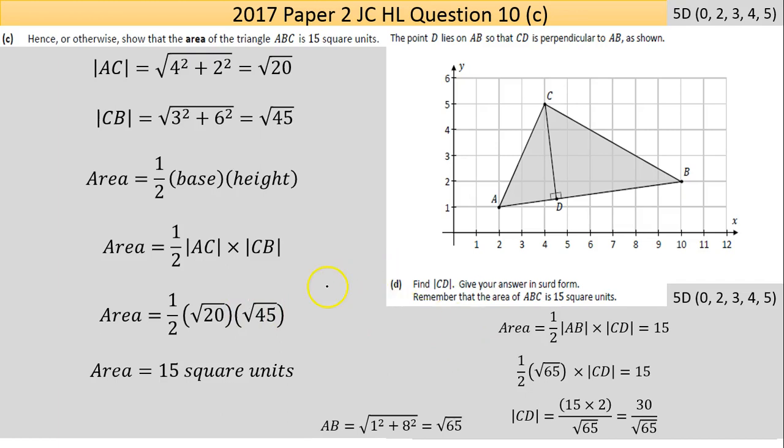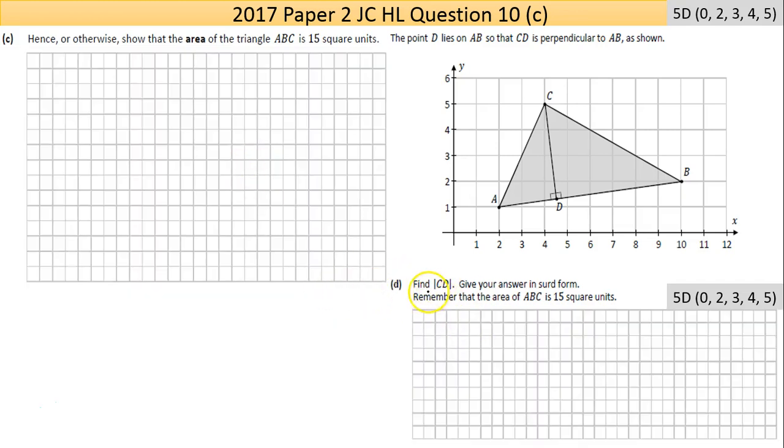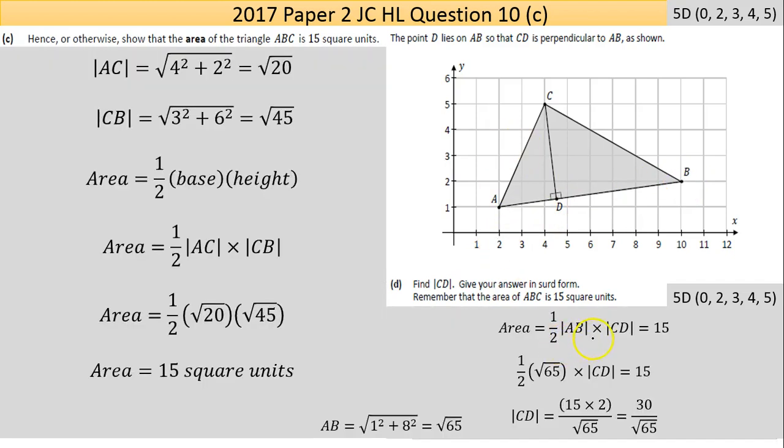Part (d): Find the length of CD, give your answer in surd form. Remember that the area of ABC equals 15 square units. If the base is AB, the perpendicular height CD has a value. 15 equals one-half base by height - there are two unknowns. AB is unknown and CD is unknown. I can calculate AB using Pythagoras.